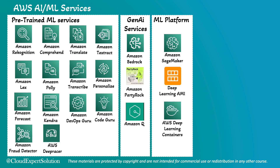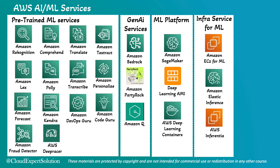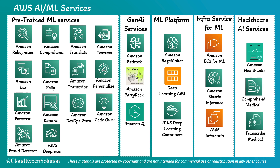Then, machine learning platforms. These services allow you to build, train, and deploy machine learning models at scale. Next, infrastructure services for machine learning — these provide the necessary infrastructure to support and scale machine learning workloads. And finally, industry-specific AI/ML services like healthcare AI services.